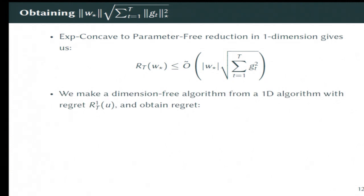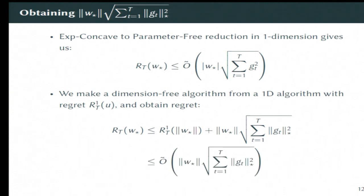Which takes us from a one-dimensional algorithm to a Banach space. And the idea is this reduction takes a 1D algorithm that gets regret r_1 of T, and it obtains an algorithm whose final regret is r_1 evaluated at the norm of the comparison point, because that's a one-dimensional quantity. The idea is the 1D algorithm is kind of learning the magnitude that we're looking for, plus another term that is on the order of the thing we're looking for. So if you just throw in big O notation here up to log factors, you actually get exactly what we tried to get.